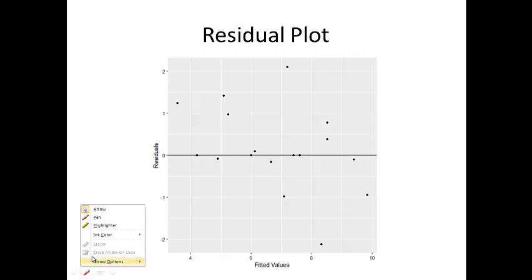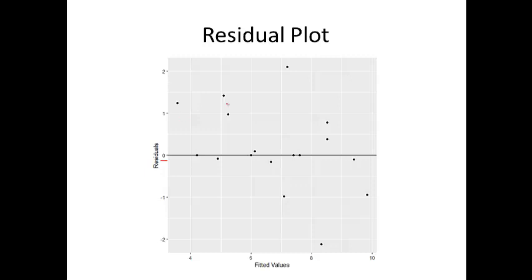As you can see here, the zero line — each dot in this chart represents a residual value. As you can see, they all randomly and independently distribute around the zero line.